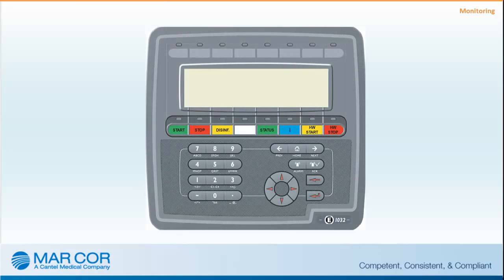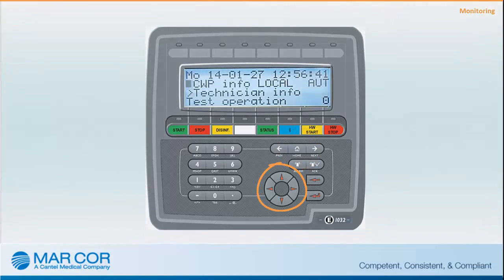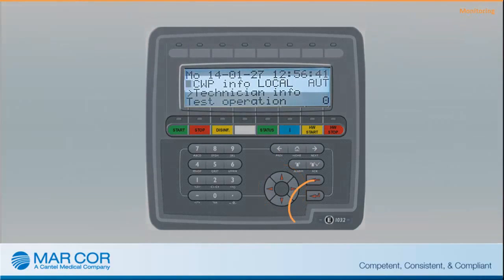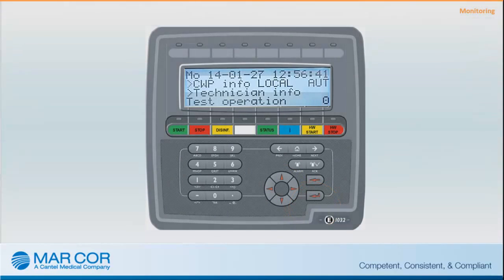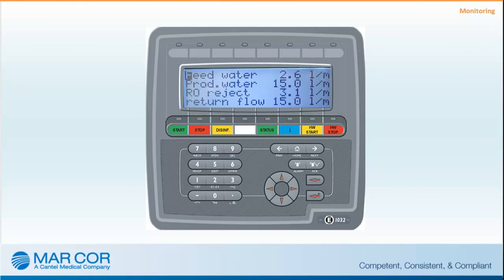The CWP RO parameters should be checked and recorded daily to ensure proper operation; the RO must be in operation when recording these parameters. To access monitoring information, press the Home Menu button. Move the cursor until it's flashing on the line that reads CWP Info, then press Enter to access the CWP Info screen. Use the up and down arrows to scroll through the parameters, which include: inlet water flow rate, product water flow rate, RO reject flow rate, and return water flow rate.